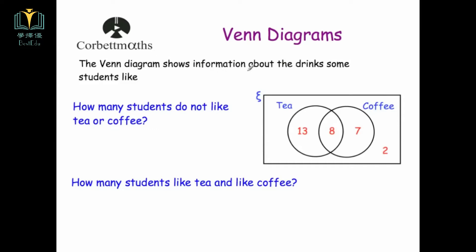The next Venn diagram shows information about drinks that some students like. The first circle shows anyone that likes tea — 13 people like only tea, and 8 people like both tea and coffee, because they're in both circles. The 7 people in the right section just like coffee but not tea, and the 2 people outside don't like tea or coffee. So the answer to 'how many do not like tea or coffee?' is 2. And 'how many like tea and coffee?' — the middle region — is 8.